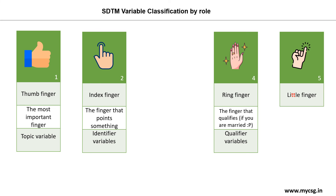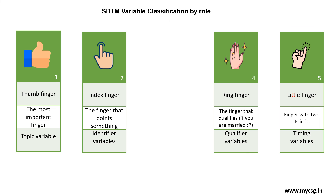And then the little finger — let us associate the tag 'the finger with two T's in it.' Associate the two T's in the spelling of 'little' to the timing variables. This way you will be able to quickly recollect the timing variables.